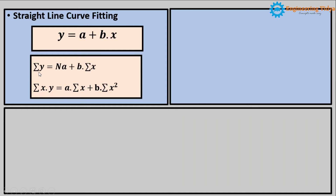So in the first equation, if we multiply x on both sides, then summation of y will be converted into summation of x into y, n will be converted into summation of x, a will be the same, and x will be converted into x square because we are multiplying x on both sides. This is the mathematical expression for straight line curve fitting.